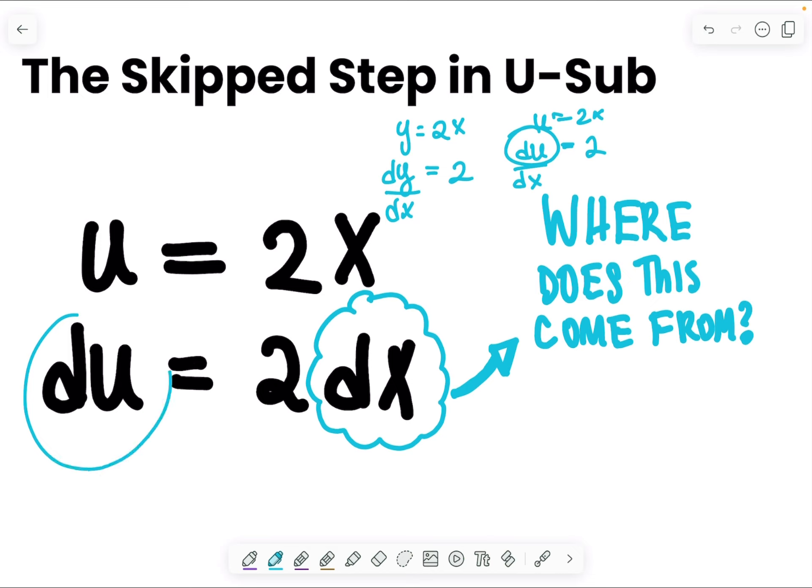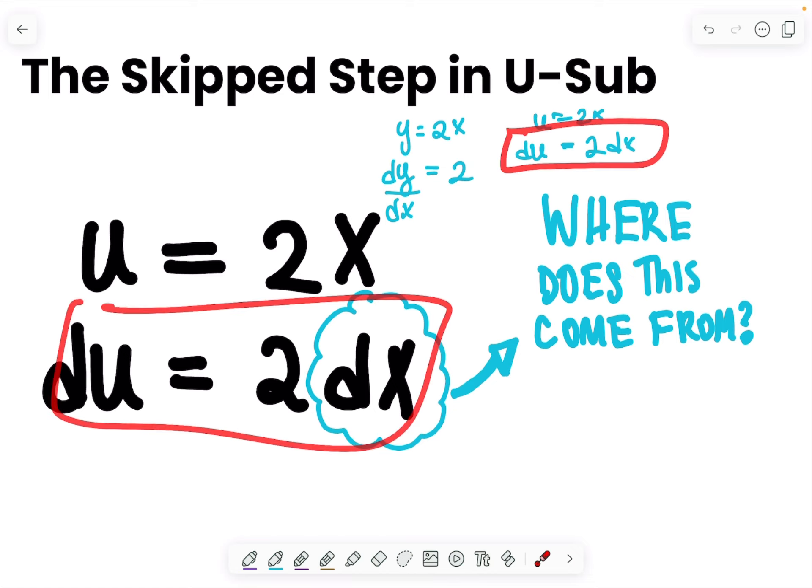I see du, and if I want du, I could just solve for du by multiplying both sides by dx to get du by itself, and so I'm left with du is equal to 2 times dx.